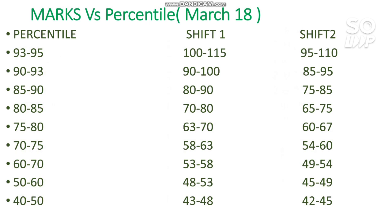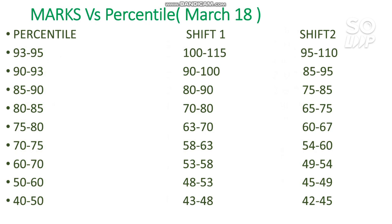For 75 to 80 percentile you need to score 63 to 70 marks, for 70 to 75 it is 58 to 63, for 60 to 70 it is 53 to 58 marks, for 50 to 60 you need to score 48 to 53, and for 40 to 50 percentile you need to score 43 to 48 marks. You can check the Shift 2 marks range separately.